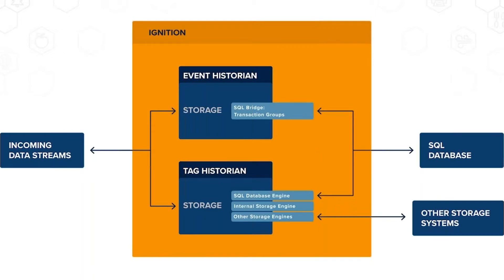Looking at the technology stack for Ignition as a historian, the incoming data streams from the left of the diagram are generally tag data coming in from PLCs, RTUs, and remote units that do tag-based communication. Those data streams could come from other places too — you can store anything you want inside tags as long as they're standard variable types.